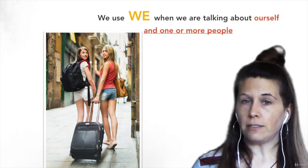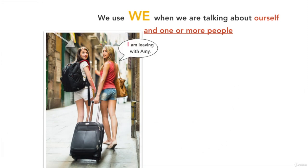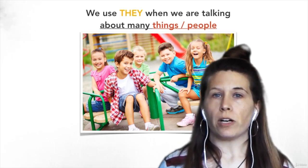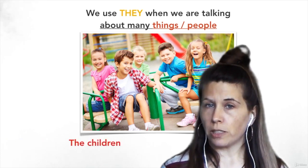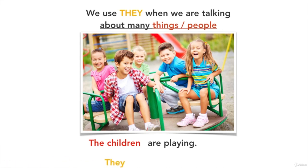We use we when we are talking about ourselves and one or more people. Amy and I are leaving. Amy and I — we — are leaving. We use they when we are talking about many things or people. The children are playing. The children — they — are playing.